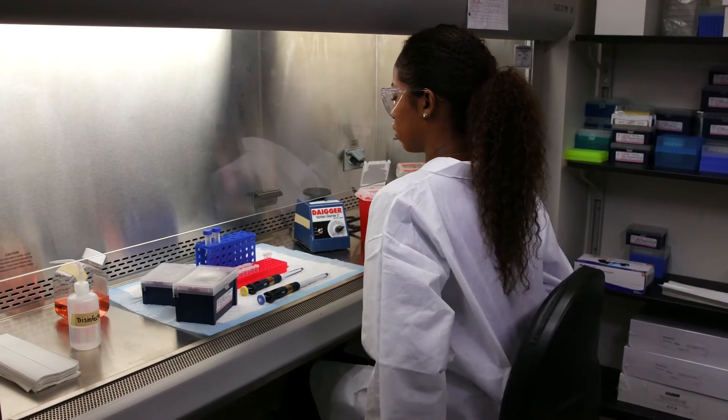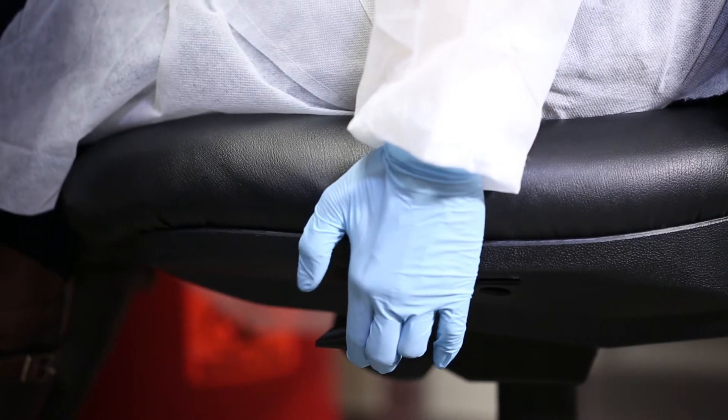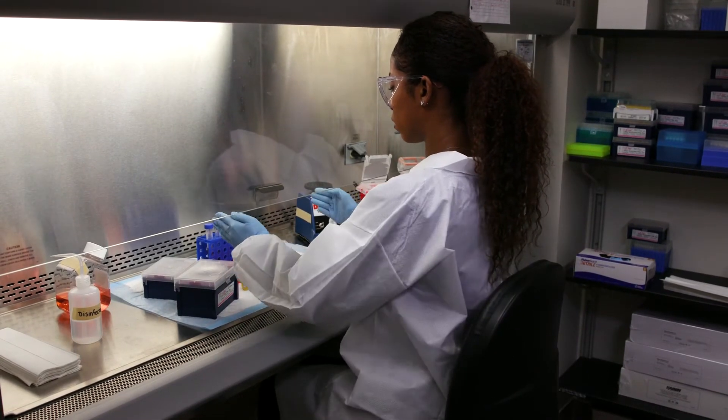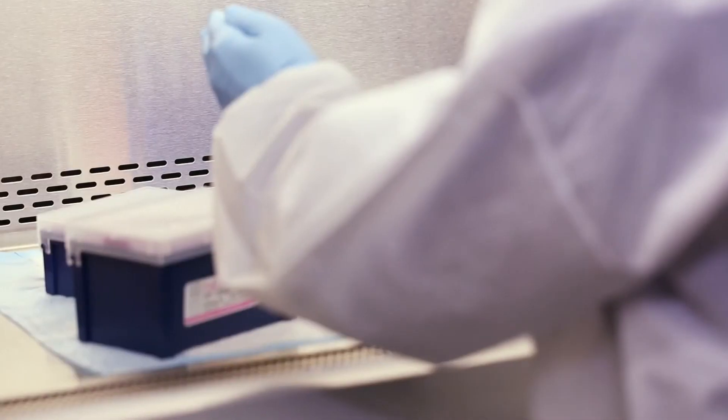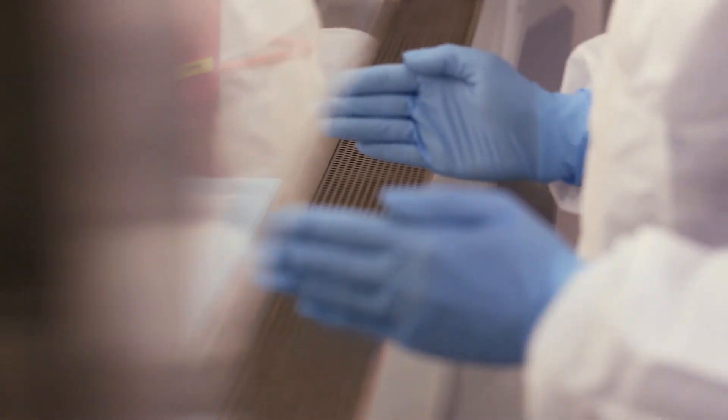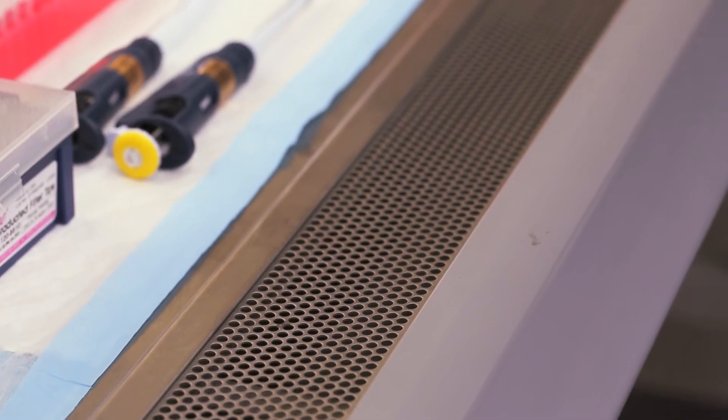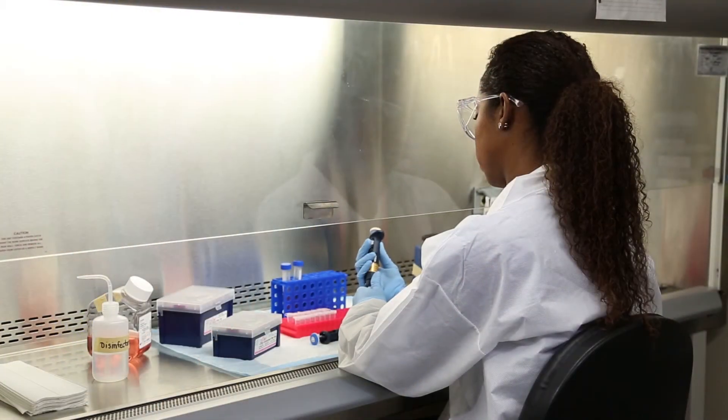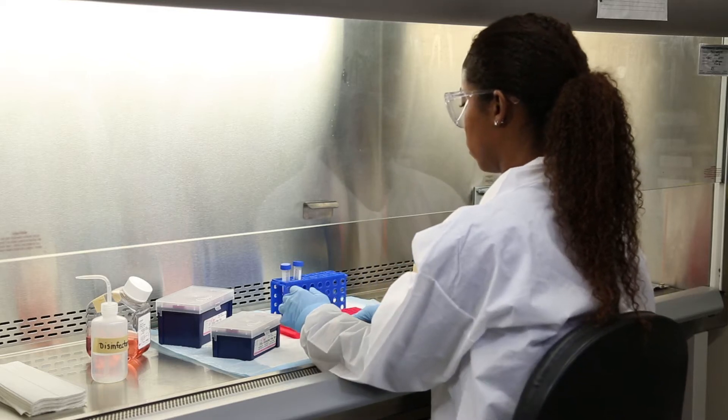Sit down at the BSC and adjust the height of the chair so your face is above the opening and behind the glass. Your arms should be bent at a 90-degree angle at the elbow while inside the BSC. Some BSCs are designed to allow your arms to rest on the front part of the BSC to avoid fatigue or ergonomic injuries over time.